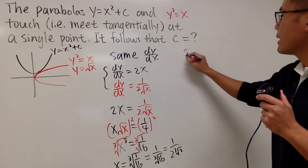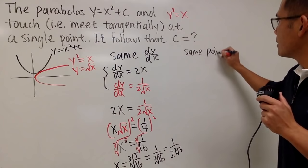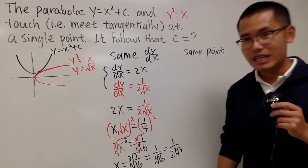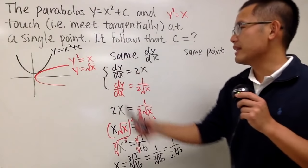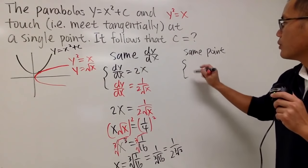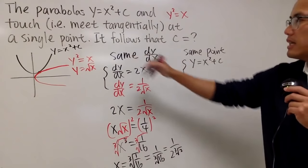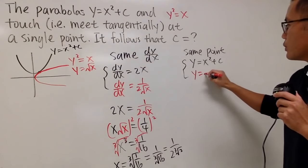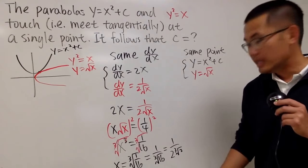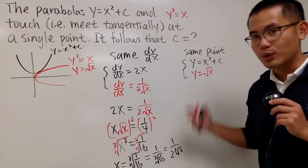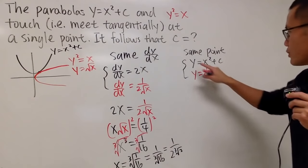Now, let's go back to the idea that they have the same point. When they have the same point, of course, this and that are equal. First, y equals x squared plus c. Second, we have y equals square root of x. And we have the x value already, so we don't care about c. That means I can put this right here.